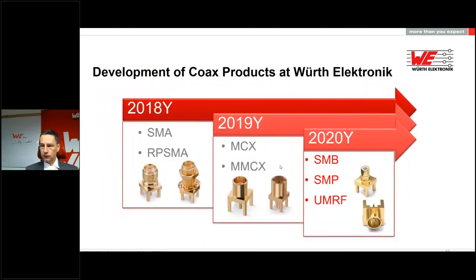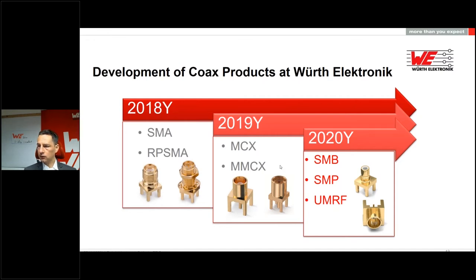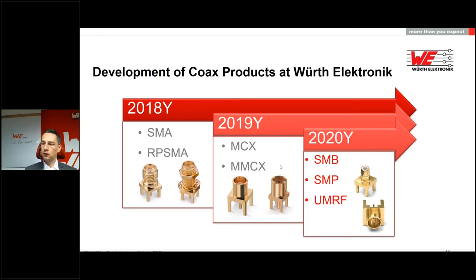For Würth Elektronik, we started with coaxial or RF connectors at the beginning of 2018, starting with SMA and reverse polarity SMA connectors. In 2019 we added MCX and MMCX, and in 2020 SMB and SMP. The newest addition, which we got just a few weeks ago this fall, is the UMRF.